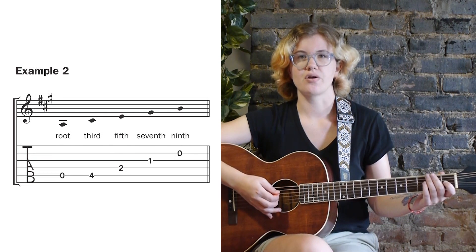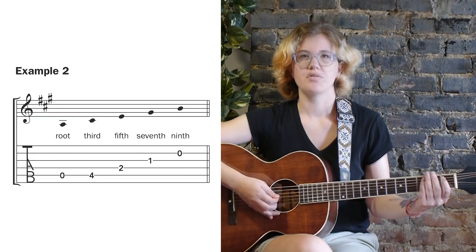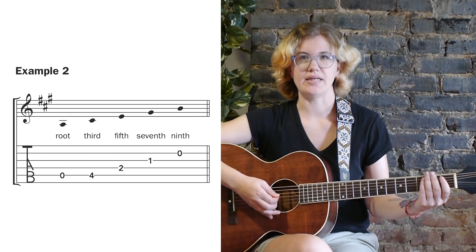Example 2 shows us the notes in an A major 9 chord. The notes are A, C sharp, E, G sharp, and B.